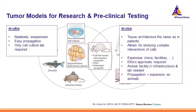For the in vitro models, you have 2D cell lines that you can order and simply put in a dish — they will grow and are quite easy to propagate. You can easily manipulate them, add compounds, and perform testing. Basically you only need a cell culture lab to run in vitro tests.